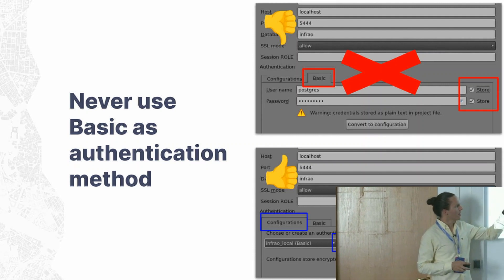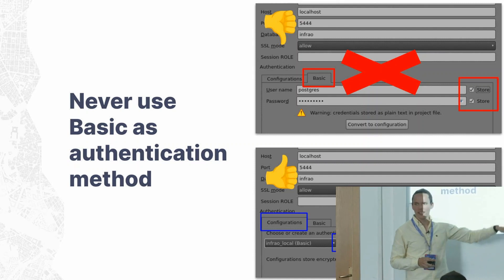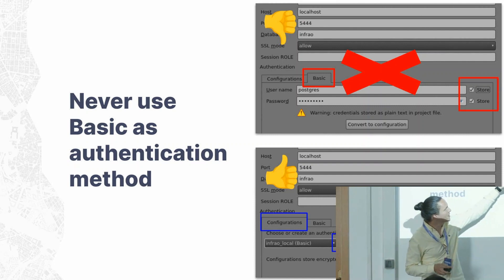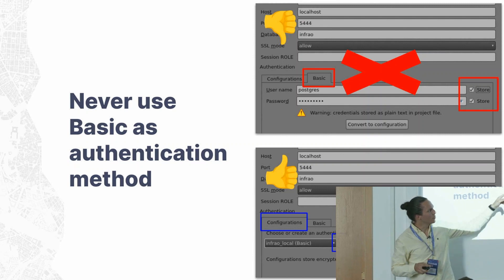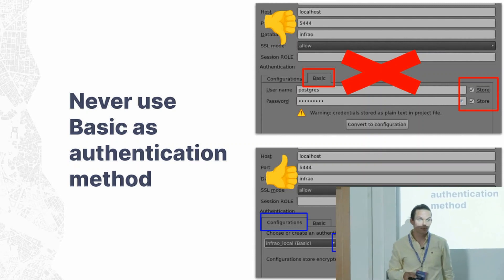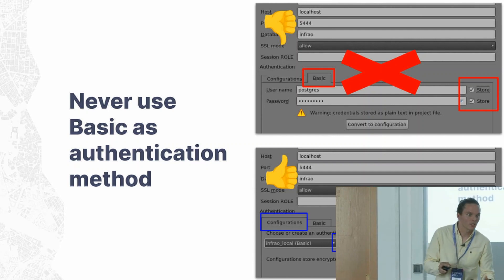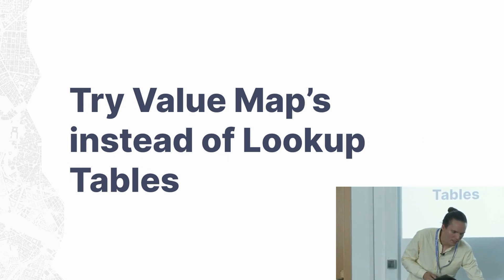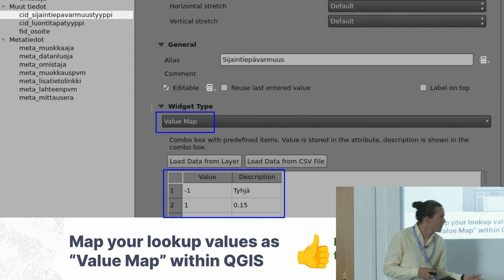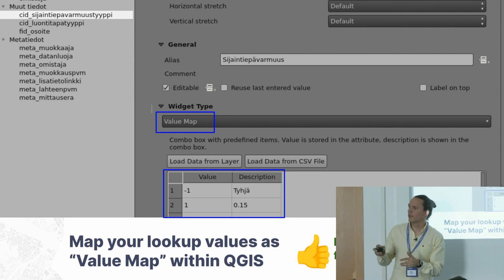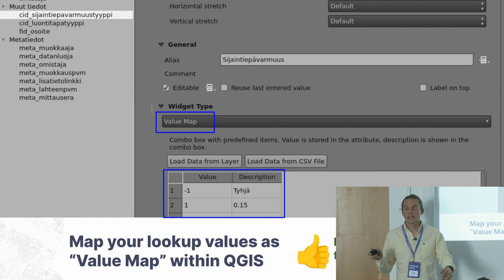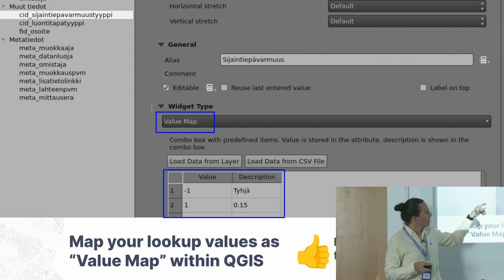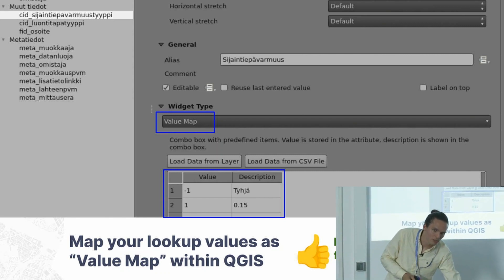Never use Basic as your authentication method — use the QGIS authentication database instead. Basic authentication stores the username and password in the QGIS project file as plain text, which is a security risk. For performance optimization, consider using value maps instead of lookup tables. QGIS can take extra time to load relational lookup tables from the database, so if your lookup tables don't change often, value maps store values locally and can be faster.